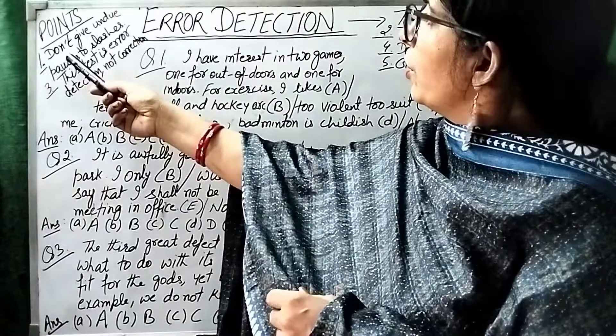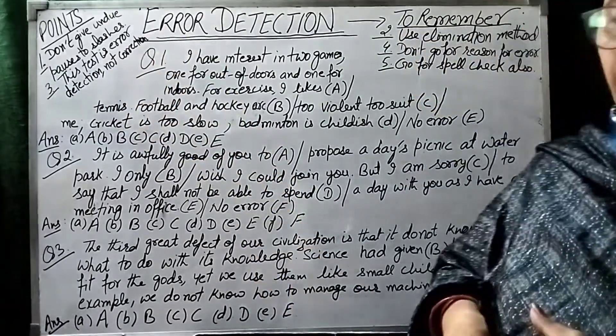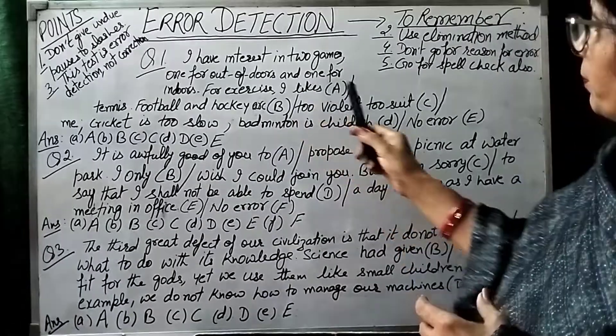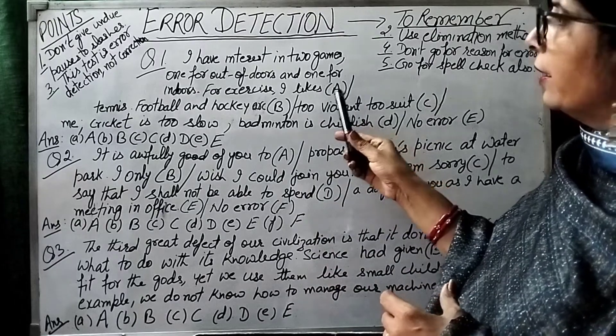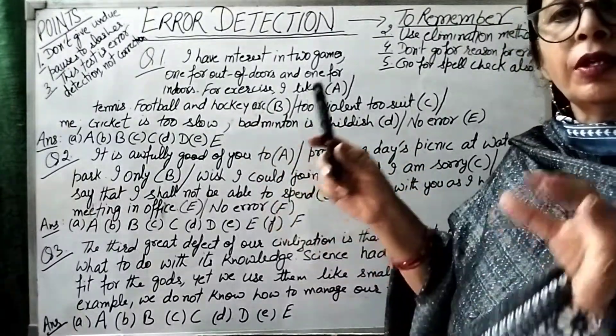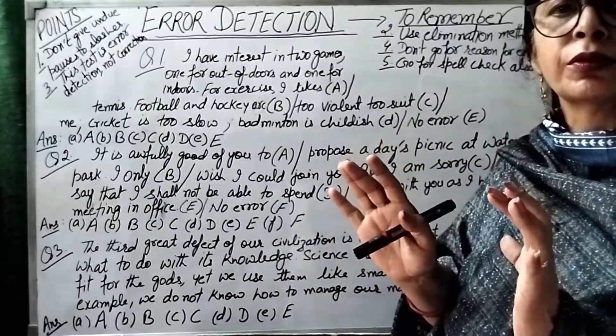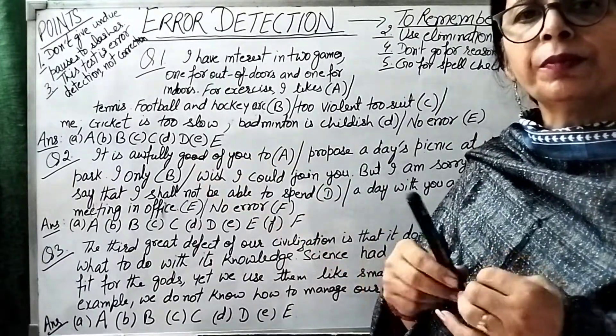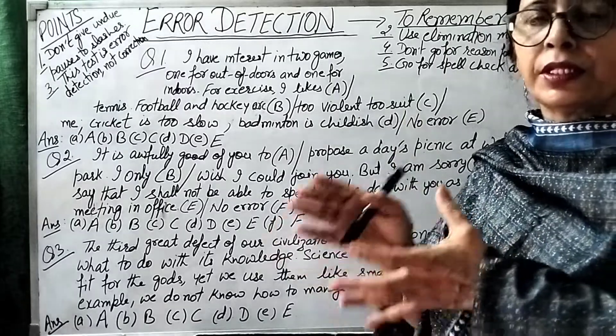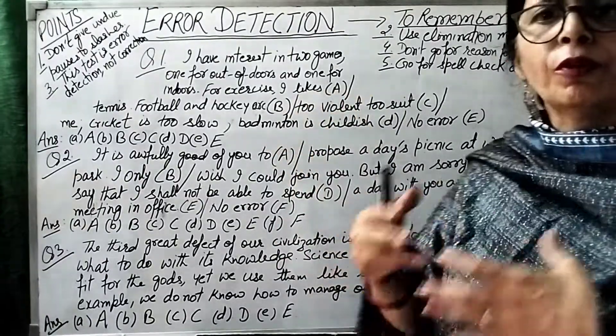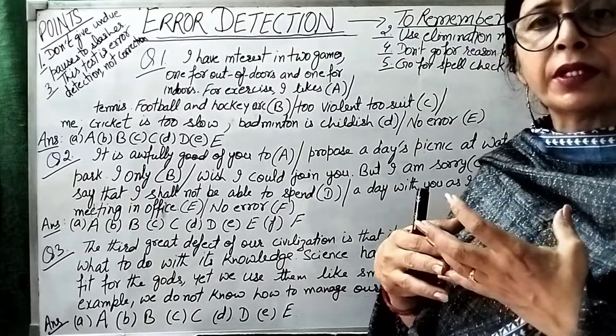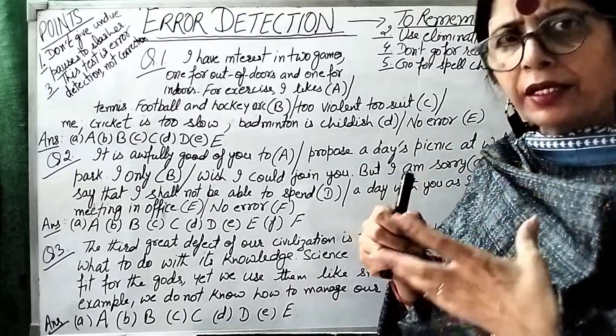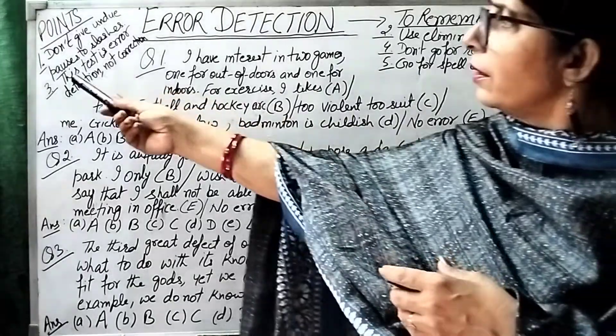First point: don't give undue pauses to slashes. In your error detection question, you have a question with slashes. In every slash, you can see a division. But when you look at slashes, you don't have a lot of pauses. Sometimes you don't have a lot of slashes. You don't need a solution. So this is the first step.